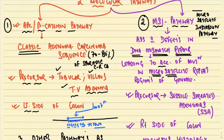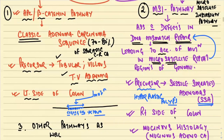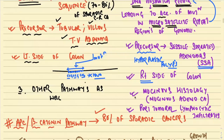In the MSI pathway, there are defects or mutations affecting the microsatellite areas which harbor DNA mismatch repair genes. The precursors are a type of adenoma called sessile serrated adenoma (SSA), and also hyperplastic polyps — although hyperplastic polyps are basically benign, they too harbor mutations in this pathway. The colorectal carcinomas arising via the MSI pathway involve the right side of the colon more than the left side.